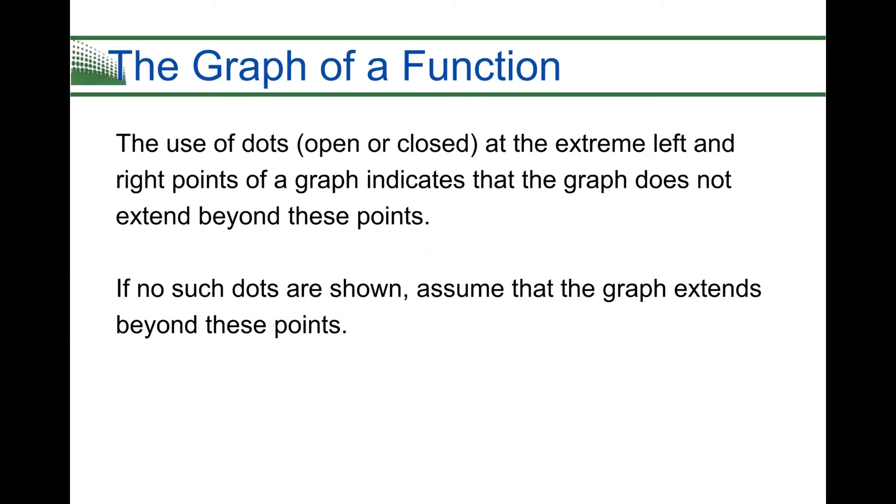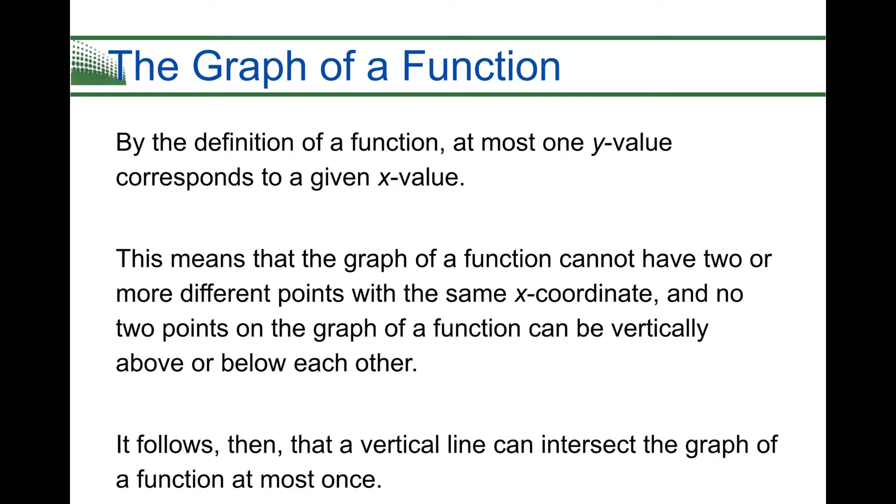The use of dots, open or closed, at the extreme left and right points of a graph, like we saw in that previous problem, indicates the graph does not extend beyond these points. If no such dots are shown, we assume that the graph extends beyond these points. By the definition of a function, at most one y value corresponds to an x. So remember our x can't repeat. That means that the graph of a function cannot have two or more different points with the same x coordinate. And no two points on the graph can be vertically above or below. Again, that's where the x's don't repeat. If they were to repeat, that would put them vertically on top of each other. So it follows then that a vertical line can intersect the graph of a function at most once.